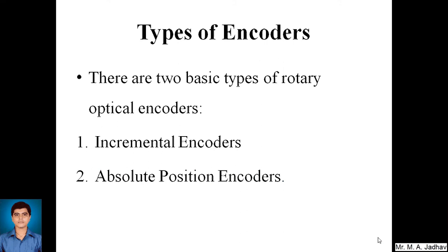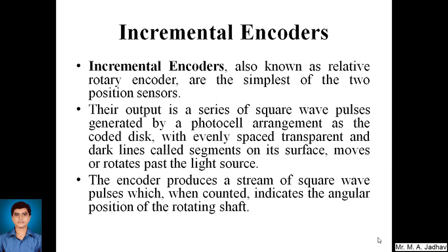We are going to go through two types of rotary optical encoders. First is incremental encoder and the other is absolute position encoder. Incremental encoders, also known as relative rotary encoders, are the simplest of these two position sensors. Optical encoders can be used as position sensors that will give us the angular position of the shaft while it is rotating.